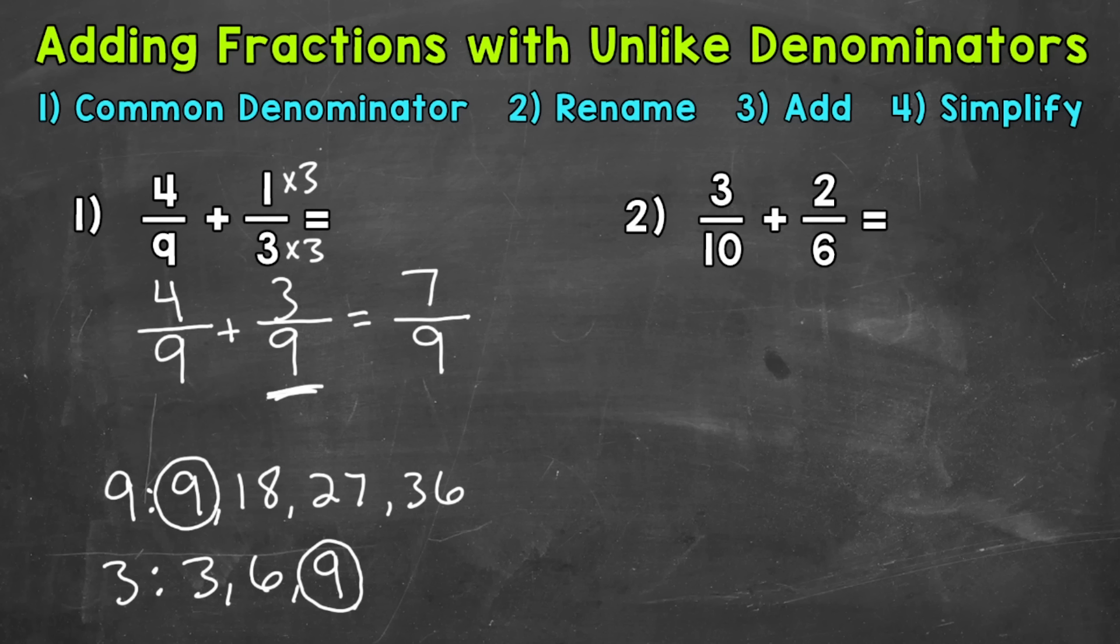Now it's common practice to simplify fractional answers. So we look to see if we can break this fraction down at all. Are there any common factors between 7 and 9 besides 1? Can we simplify? No. The only common factor between 7 and 9 is 1. So this is in simplest form. And we are done. 7 ninths is our final answer.